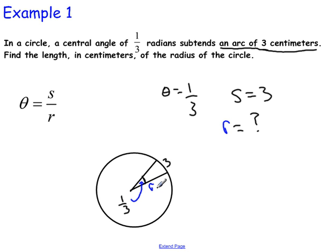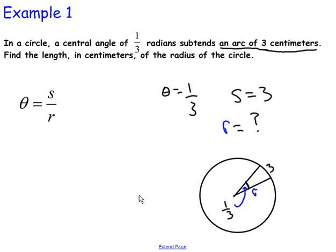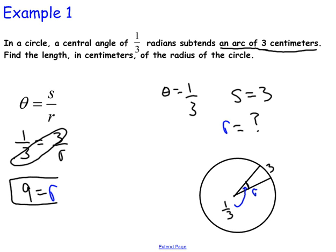All right, so let's substitute into the formula. So theta is one-third, so I'm going to write one-third equals S over R, so that's going to be three over R. Cross multiply to solve for R. Three times three is nine, so nine equals R. So the radius is nine.